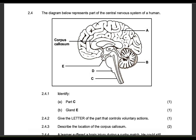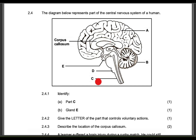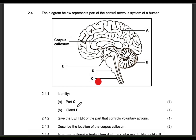Let's look at the next question — second question, 2.4. Same style of questioning when it comes to the brain. The diagram below represents part of the central nervous system of a human. Identify part C — that is obviously the spinal cord.